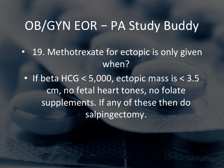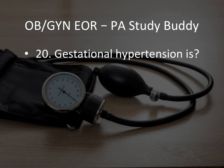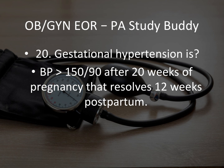Question 20: Gestational hypertension is blood pressure greater than 150/90 after 20 weeks of pregnancy that resolves 12 weeks postpartum. The question they'll ask is how long after delivery can we expect this to resolve — the answer is 12 weeks. It's greater than 150/90 after 20 weeks: gestational hypertension.